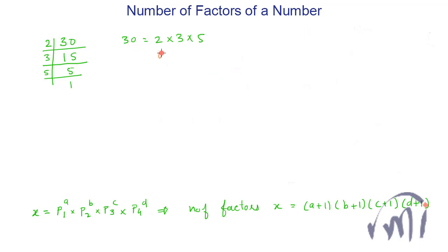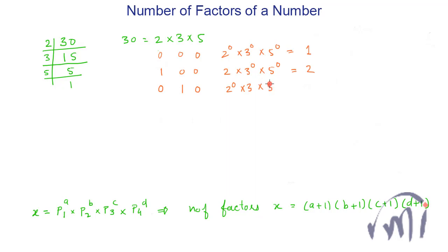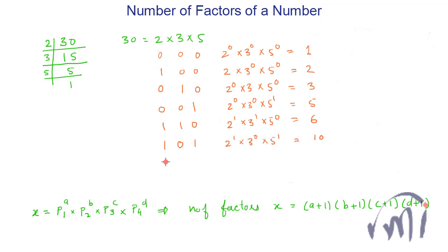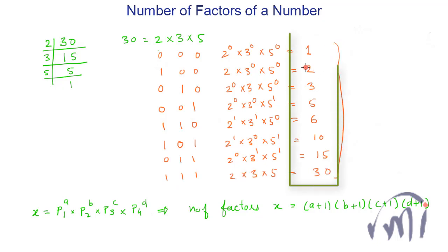Now let us list them. When all powers are 0: 2⁰ × 3⁰ × 5⁰ = 1. When 2 has power 1 and the others are 0: 2 × 3⁰ × 5⁰ = 2. With powers 0, 1, 0: 2⁰ × 3 × 5⁰ = 3. With powers 1, 1, 0: that gives 6. We continue through all combinations and get the full list of 8 factors for 30, which is exactly what we found using the formula.